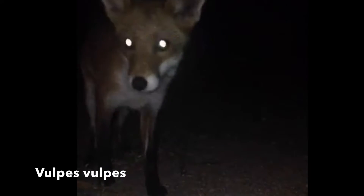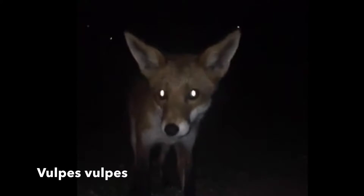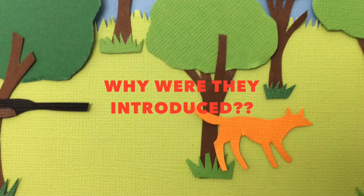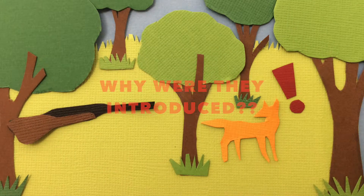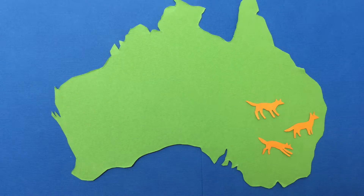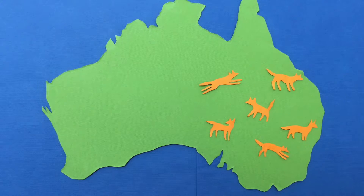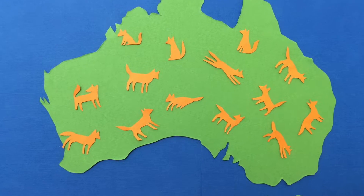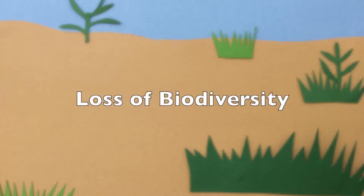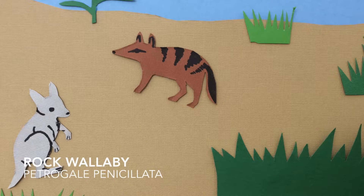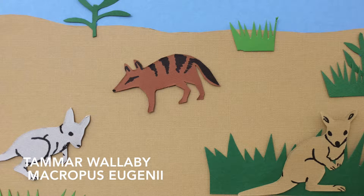One of Australia's biggest threats is the red fox. Red foxes were introduced in 1855 for recreational hunting, but spread quickly and established wild populations all throughout mainland Australia. Red foxes are a key natural threat to vulnerable Australian species such as the numbat, rock wallaby and tamar wallaby.